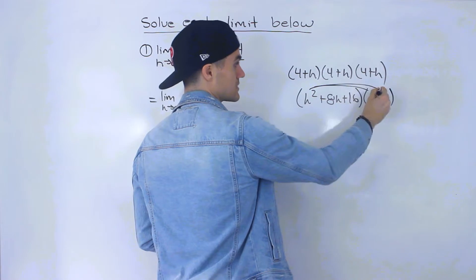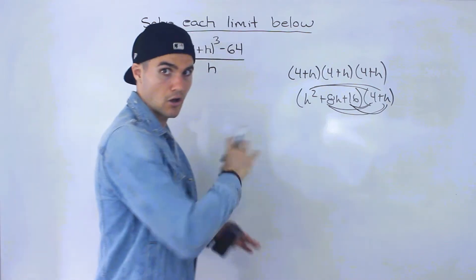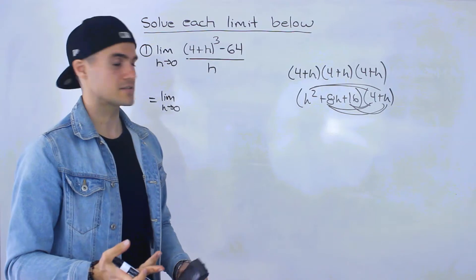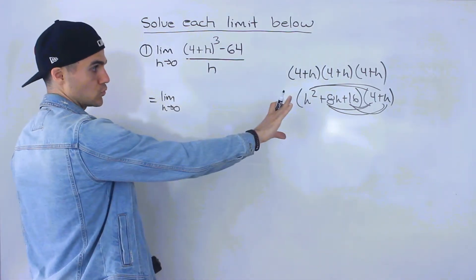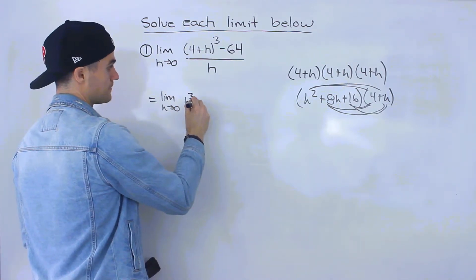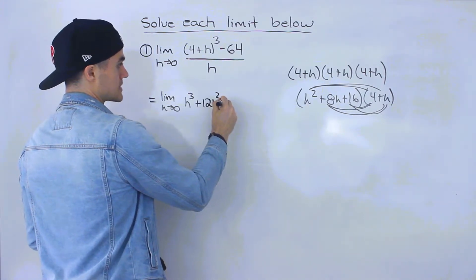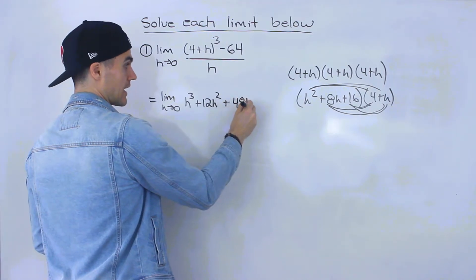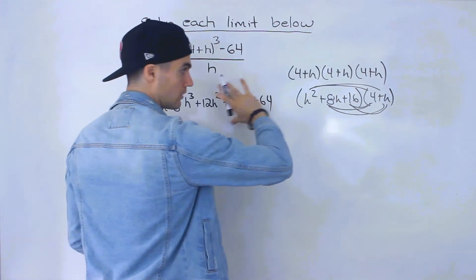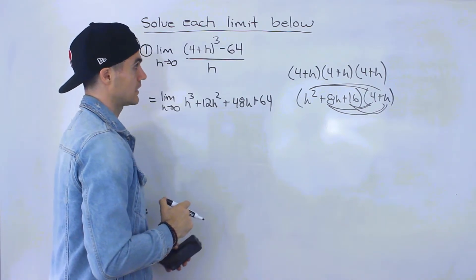And now we've got to foil these two brackets. We've got to do each term times each term, and then we get all those expressions and have to simplify all the like terms. It's a bit more of a headache. However, if you were to do it this way, the expression you'd end up getting is h cubed plus 12h squared plus 48h plus 64.